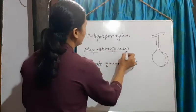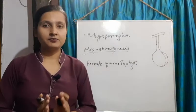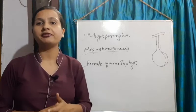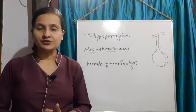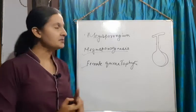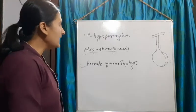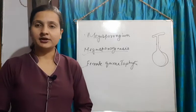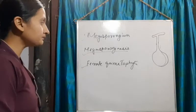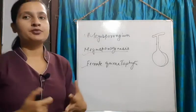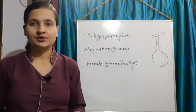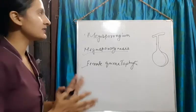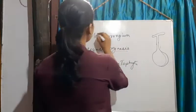Firstly, what is megasporogenesis? Just as we learned about microsporogenesis — where male gametes are formed — similarly, in megasporogenesis, female gametes are produced. This is a process where female gametes are produced by the female gametophyte. To learn how gametes are formed, we need to know the structure of the megasporangium.